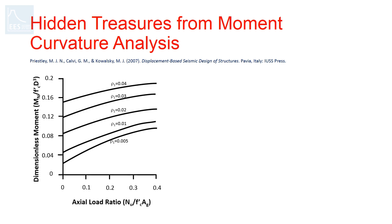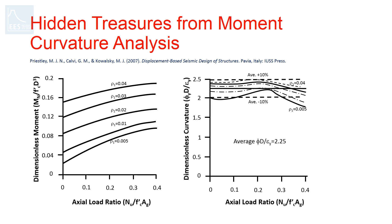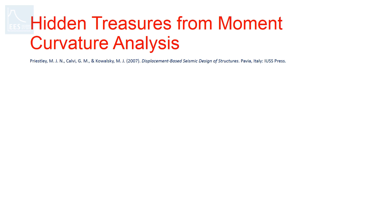The plot between axial load ratio and dimensionless nominal moment capacity shows it increases with both axial load ratio and amount of reinforcing steel. However, the plot between axial load ratio and dimensionless yield curvature shows that even for high amounts of reinforcing steel in the range of four to five percent, it does not vary much. The average value of this dimensionless yield curvature quantity is 2.25. Based on this, it can be concluded that yield curvature is independent of moment capacity.